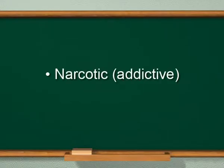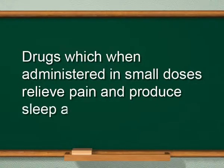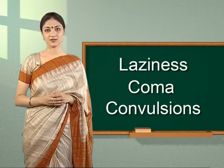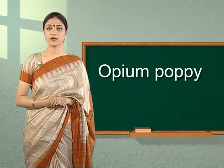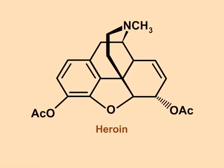Narcotic analgesics: drugs which, when administered in small doses, relieve pain and produce sleep are called narcotics. However, in large doses they produce stupor, coma, convulsions and may ultimately cause death. Most of these are obtained from opium poppy and hence are called opiates. Opium contains alkaloids like morphine and codeine which are very effective analgesics. Morphine diacetate, commonly known as heroin, is the most widely used analgesic. These are chiefly used for the relief of post-operative pain, cardiac pain, pains of terminal cancer and in childbirth. However, these alkaloids are known to be habit-forming.